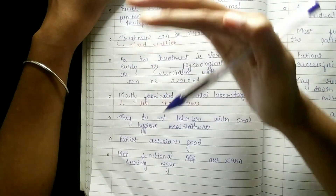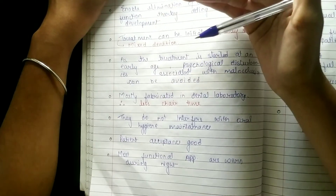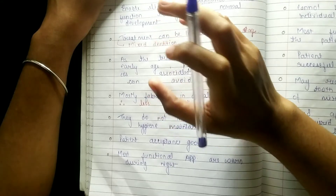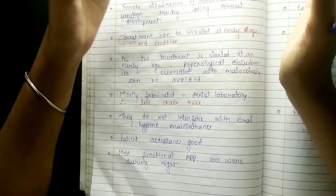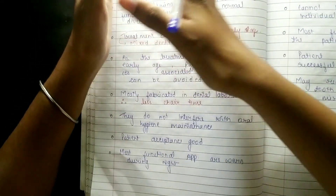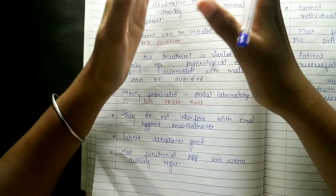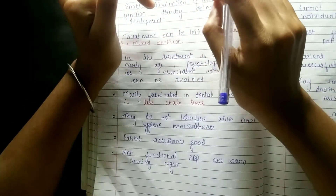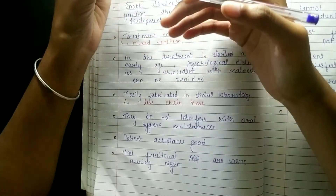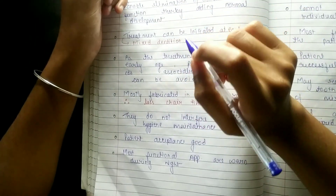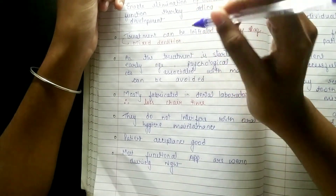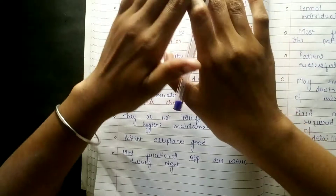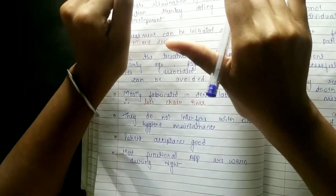Treatment can be initiated at an early age — remember that early age treatment means the mixed dentition stage, also called the ugly duckling stage. That means you have both primary and permanent teeth present. The treatment can be initiated at this early age, but note that in adults with permanent dentition, myofunctional appliances have no use — which links to a disadvantage.